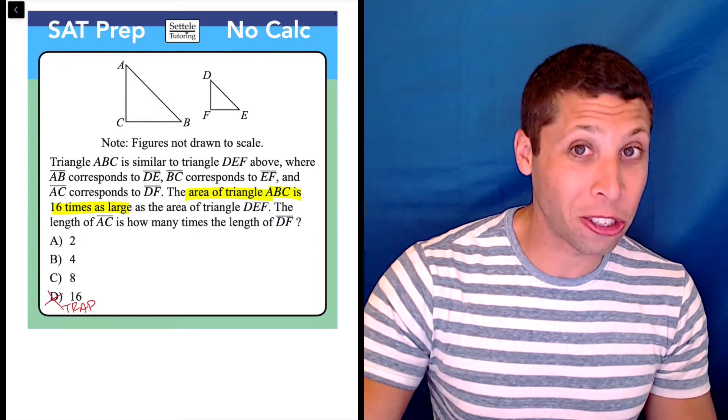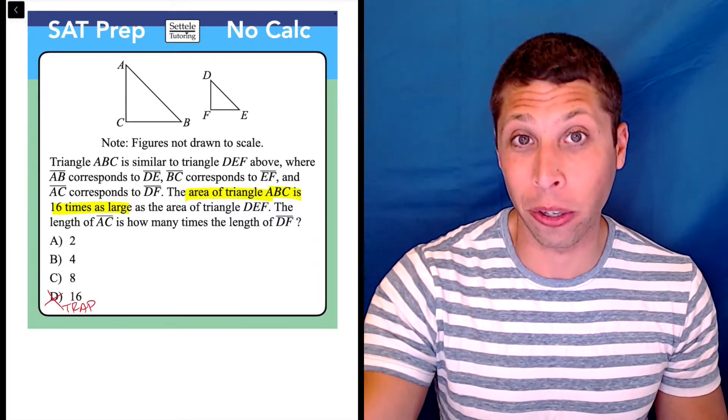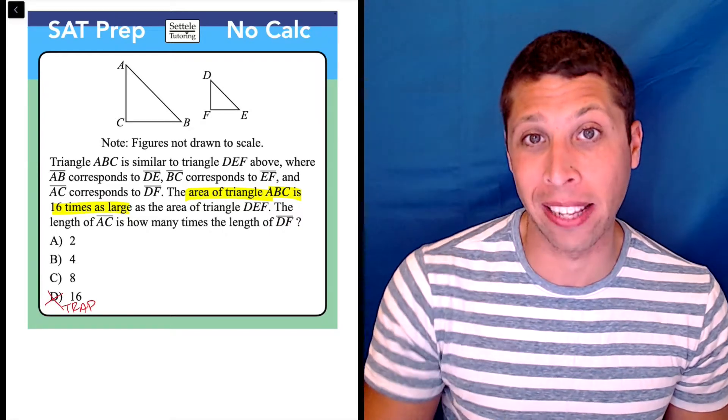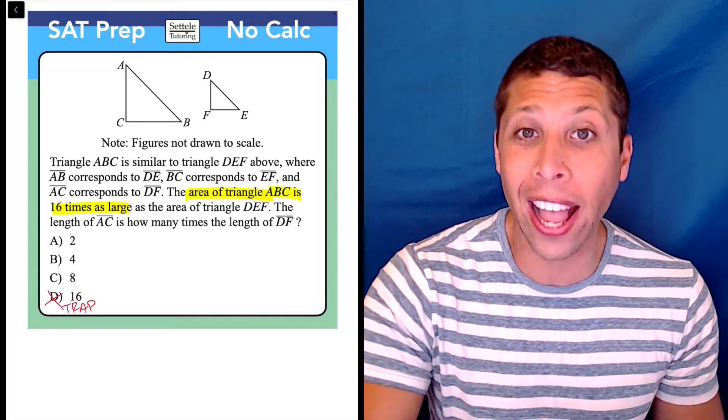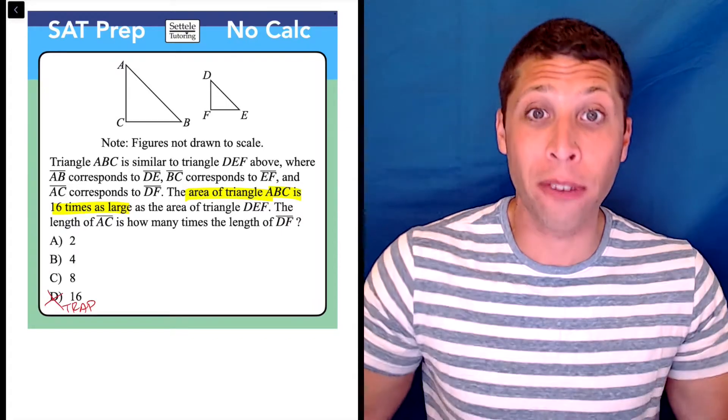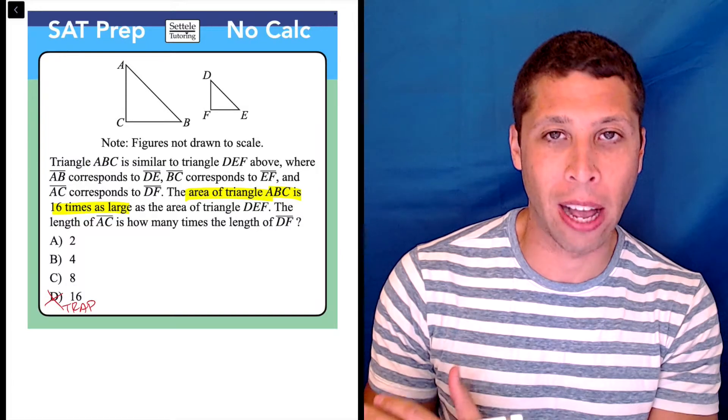Maybe if this was a question number two early on in the section where they're supposed to be really easy, then it might be that simple. But for anything medium to hard difficulty, no way is that going to be that answer. There's no math involved in that. So why would they ask it? We're going to need to do something else.